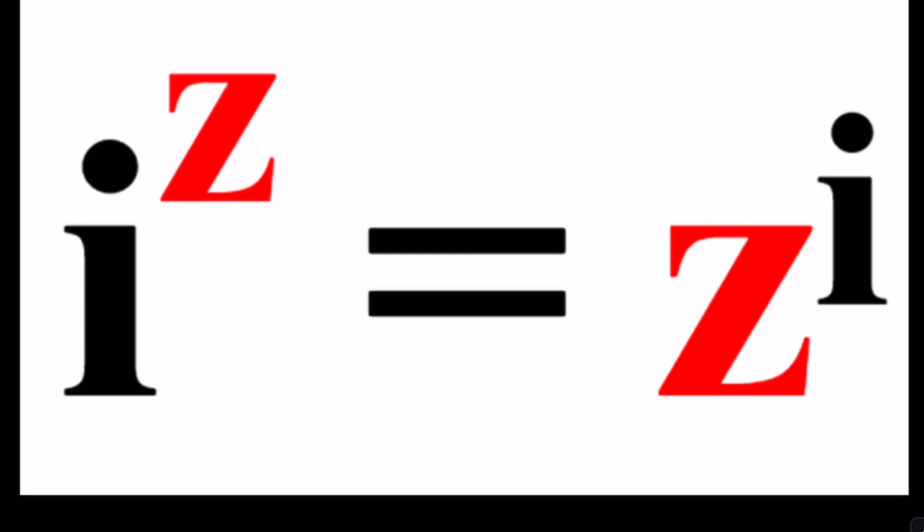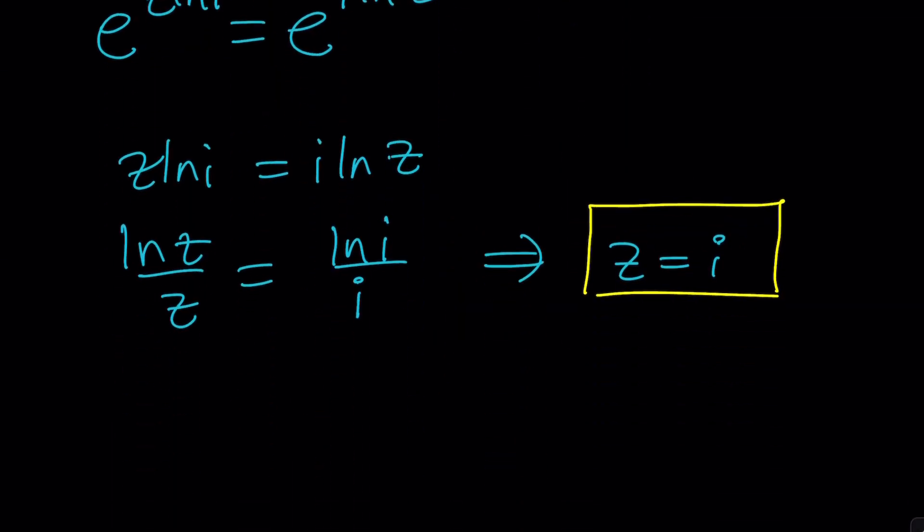And we have an equation, remember, something like x to the y equals y to the x. When x and y are equal, obviously, that equation is satisfied. But there are infinitely many other solutions, right? Cool.